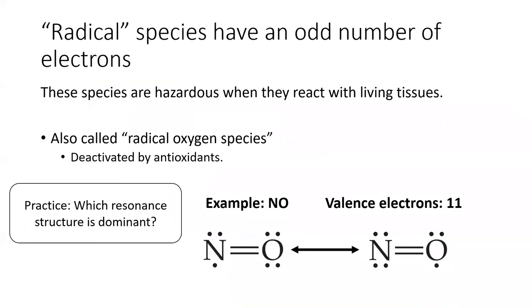You may have heard of radical oxygen species and how you want to avoid them. This is generally true. These species have an odd number of electrons and therefore cannot possibly satisfy the octet rule.